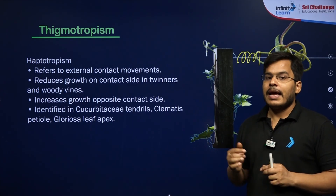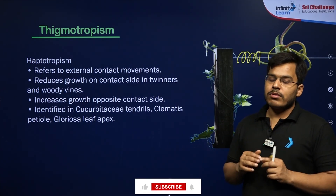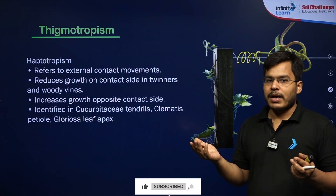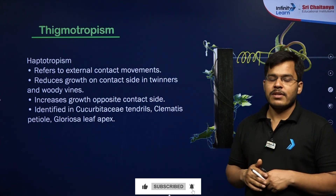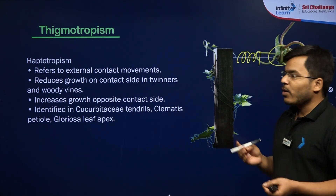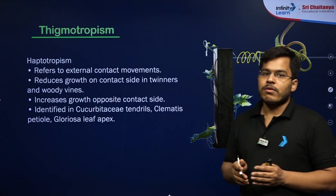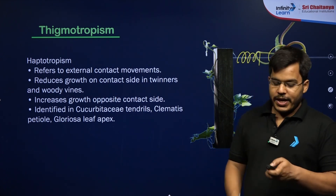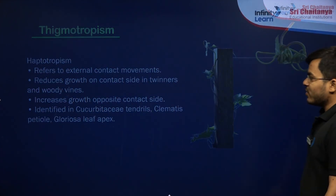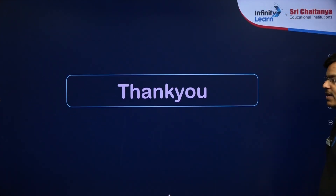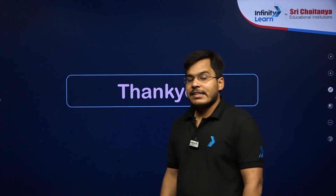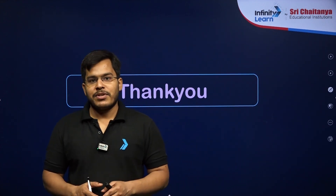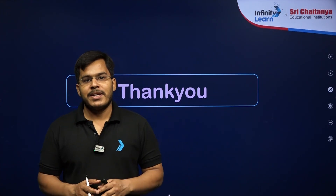To conclude: tropic movements are growth dependent, direction dependent, and slow. Nastic movements are growth independent, direction independent, and fast. These are two very important movements that plants show. Let's meet in the next session with another important topic — till then, keep growing, keep studying, bye bye everybody.